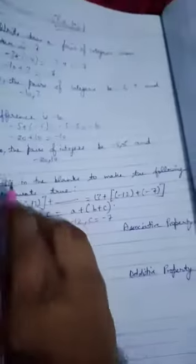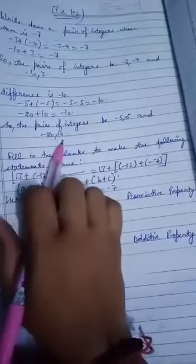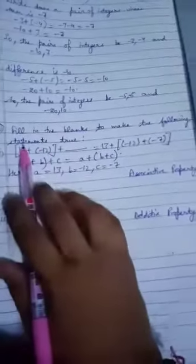Take care of the sign properly, otherwise your sum will become wrong. Minus 20 and 10.